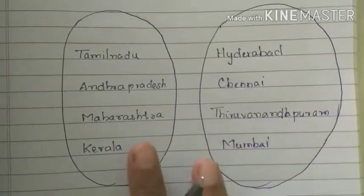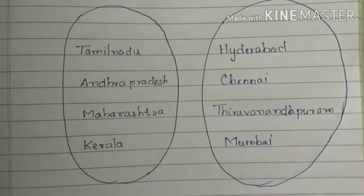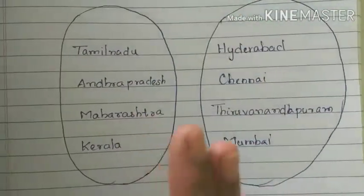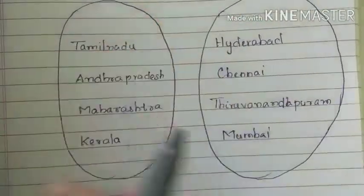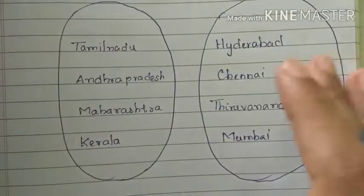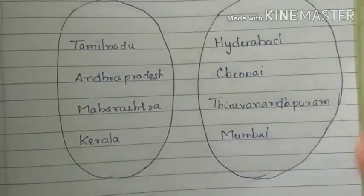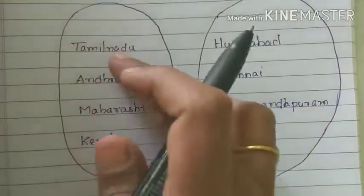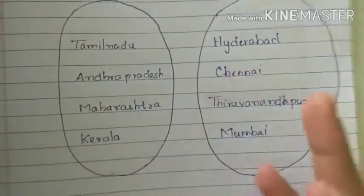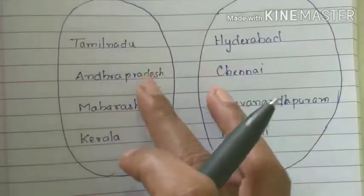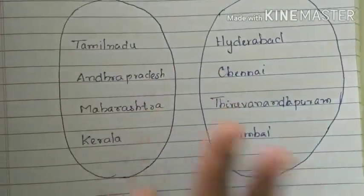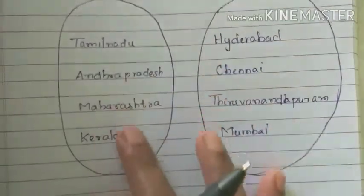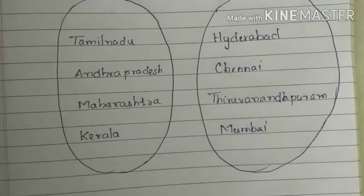Now we have two sets. In this set there is an arrow diagram. What do you need to know about the first set? This is Tamil Nadu, Andhra Pradesh, Maharashtra, Kerala. So here are the states of India.